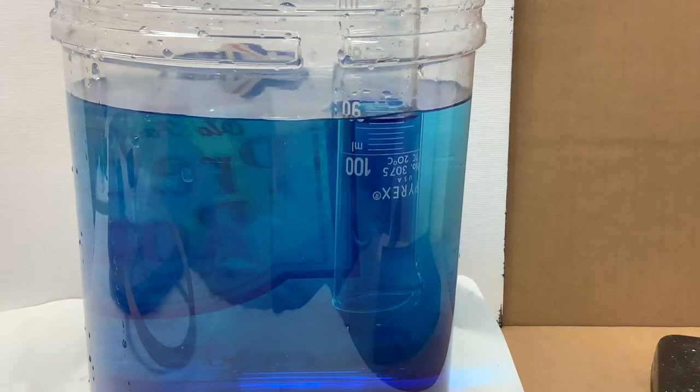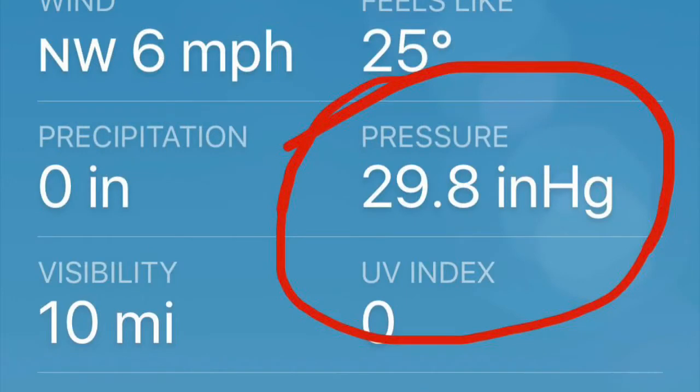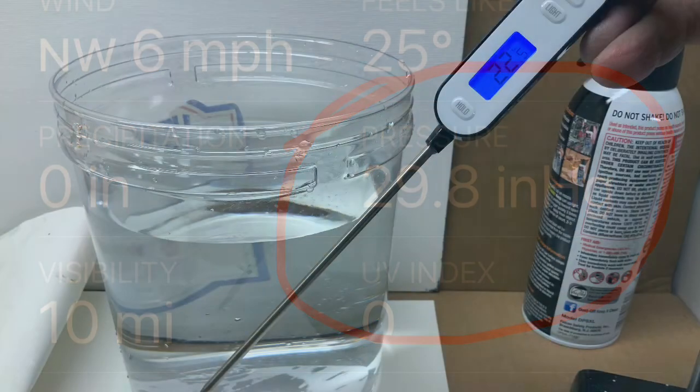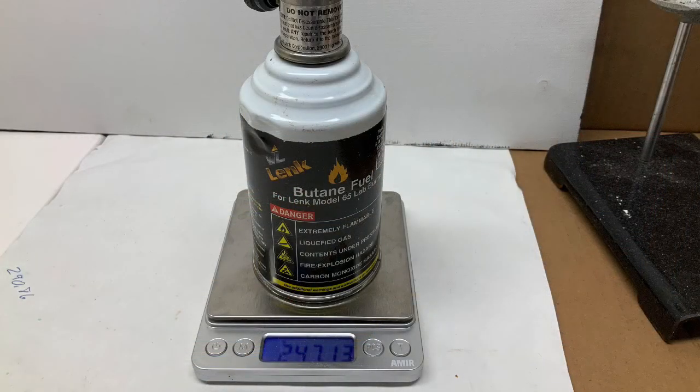So record just the pressure. It will be in inches of mercury. Don't record the temperature off the phone, wait for the temperature on the thermometer. And we'll assume that the temperature is the same for the water and the room. And record the final mass of the canister after the gas has been let out.